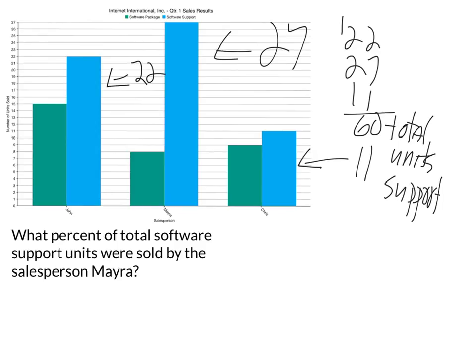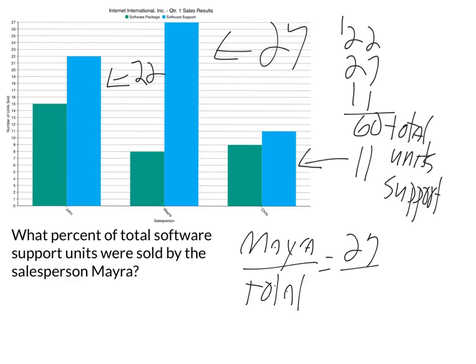Now the question is what percent was sold by Myra. We know that Myra's software support units are 27. So we set up Myra over the total: 27 over 60. We can reduce that fraction by dividing both by 3 — 27 divided by 3 is 9, and 60 divided by 3 is 20 — giving us 9/20.